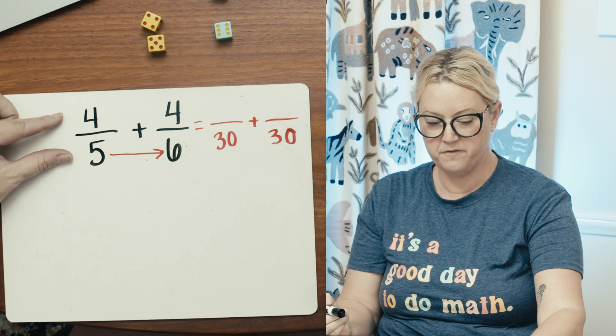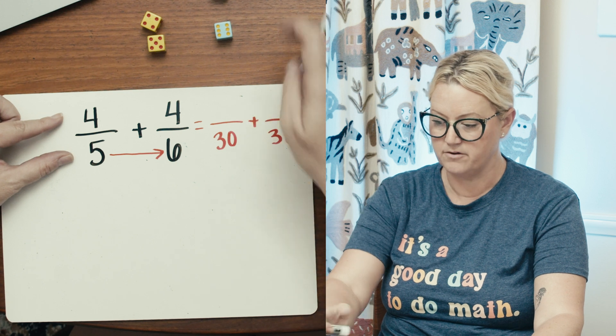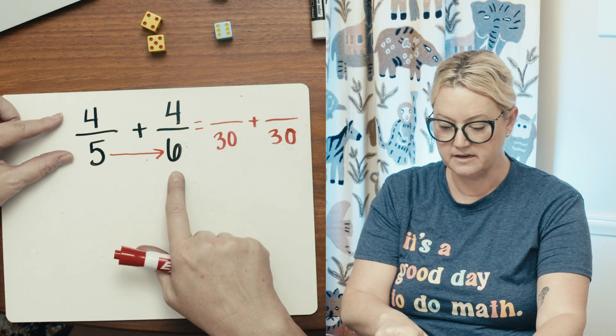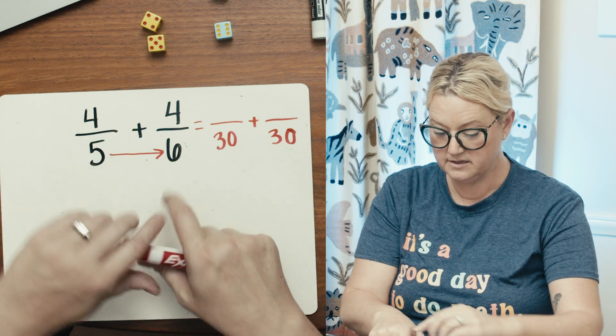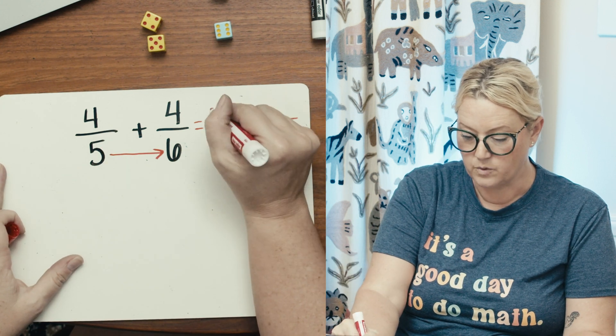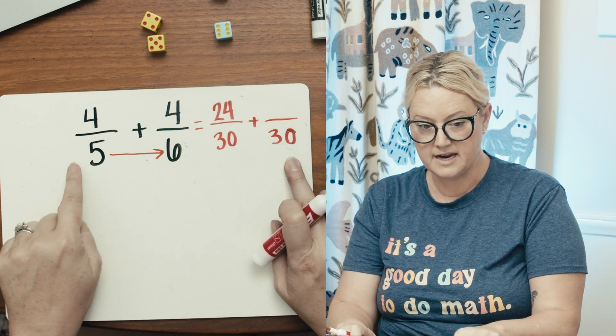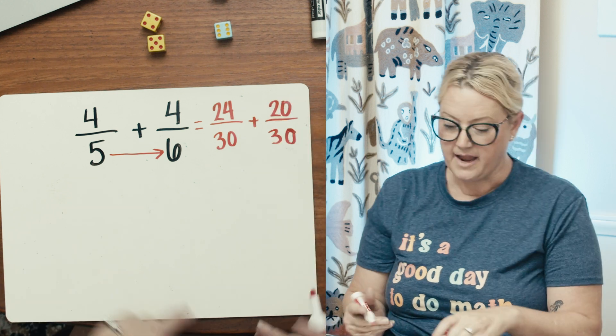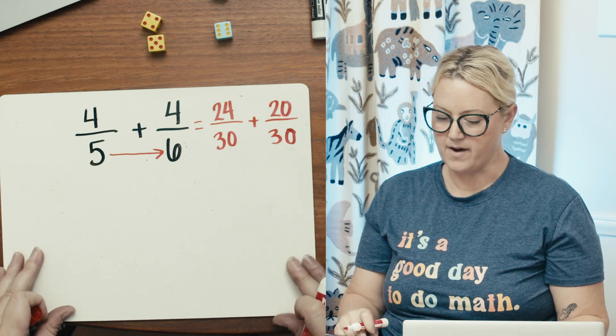So to go four fifths to something over 30, I want to look at the pattern, right? So I see five times six is 30. So I need to do four times six, which is 24. So to go from four sixths to 30ths, six times five is 30, four times five is 20. Okay, so I'm just converting them into being the same size, the same size as each other.